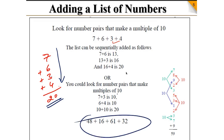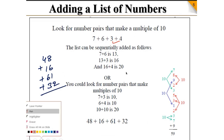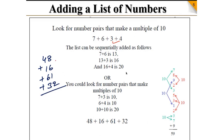Now look at this next number: 48 plus 16 plus 61 plus 32. I'm not going to add 8 plus 6 plus 1 plus 2 because that can be difficult. Instead, I find the pair: 8 plus 2 is 10, then 10 plus 6 is 16, and 16 plus 1 is 17. So the ones digit answer is 7 with a carryover of 1.